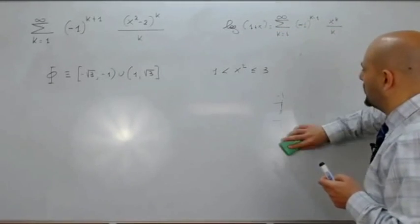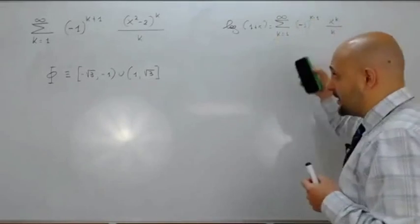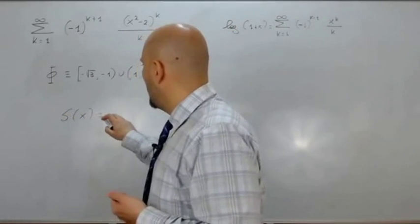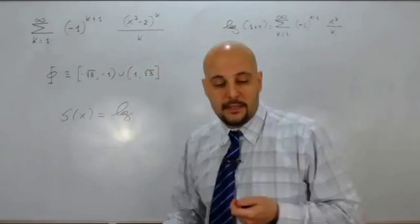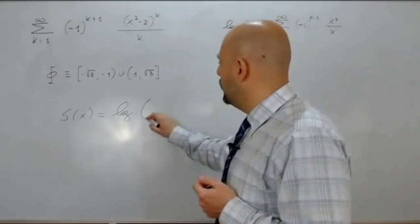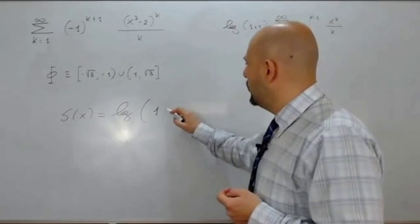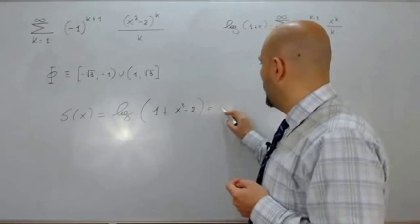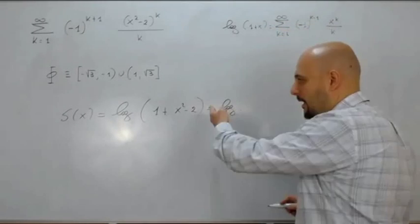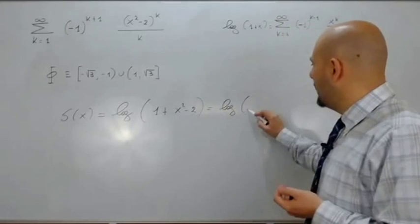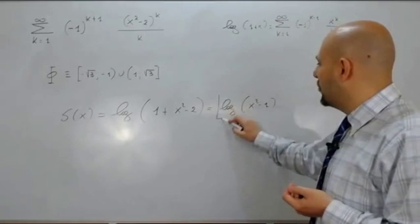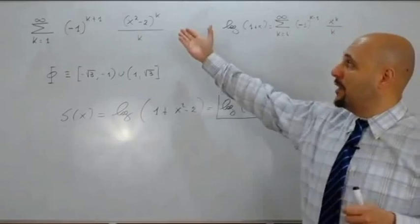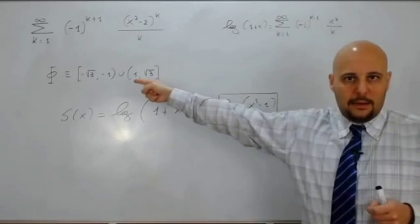Fatto questo possiamo scrivere la somma. Tenendo conto della serie modello, la nostra somma s(x) sarà uguale al logaritmo naturale — non di 1 più x, ma di 1 più x al quadrato meno 2 — cioè il logaritmo di x quadro meno 1. Questa è la somma della serie sommatoria per k da 1 all'infinito di meno 1 alla k più 1, che moltiplica x quadro meno 2 alla k fratto k.